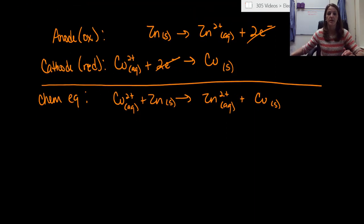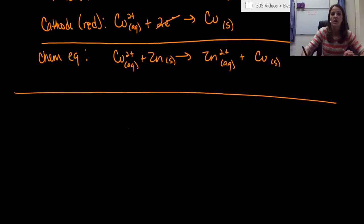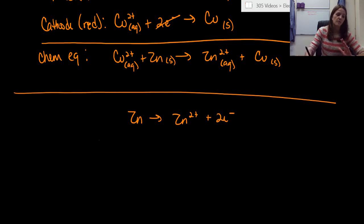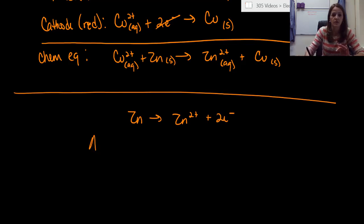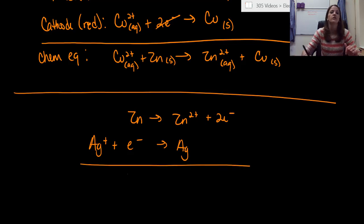Now let's ramp it up. We'll keep the zinc oxidation reaction: zinc → zinc 2+ plus two electrons. But this time we change the cathode reduction reaction to silver: Ag+ plus one electron goes to silver (Ag zero). Come up with the overall chemical equation.